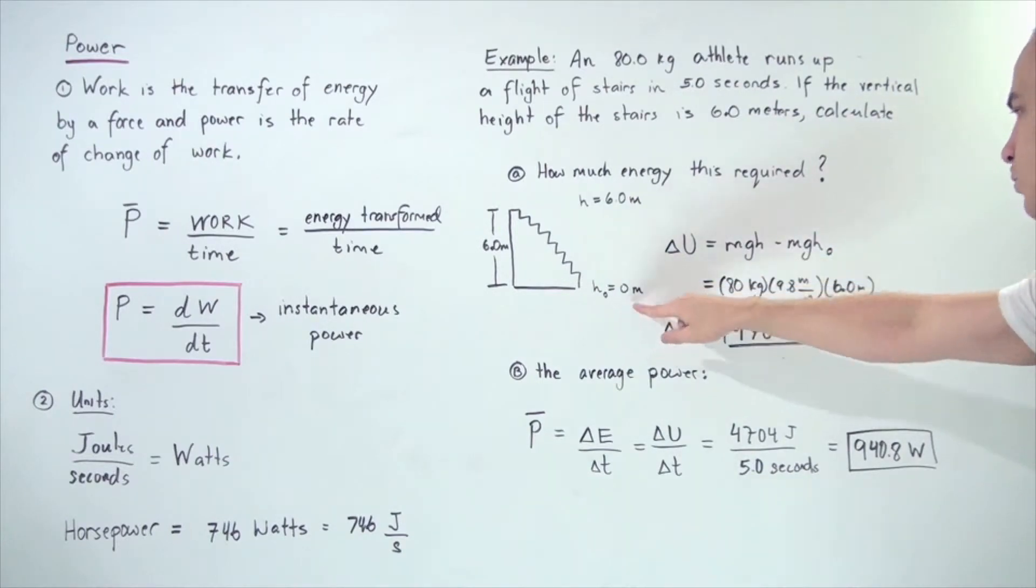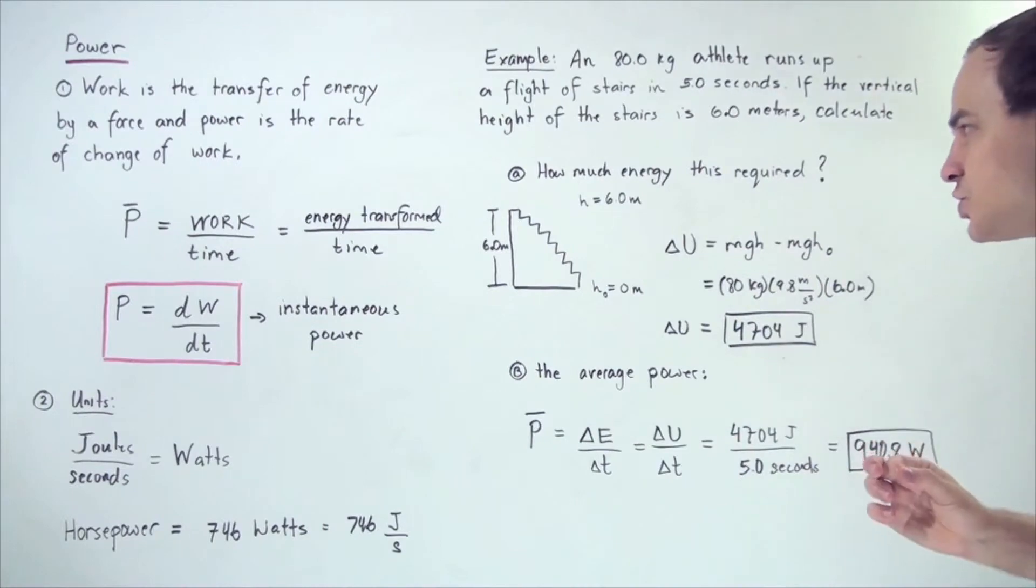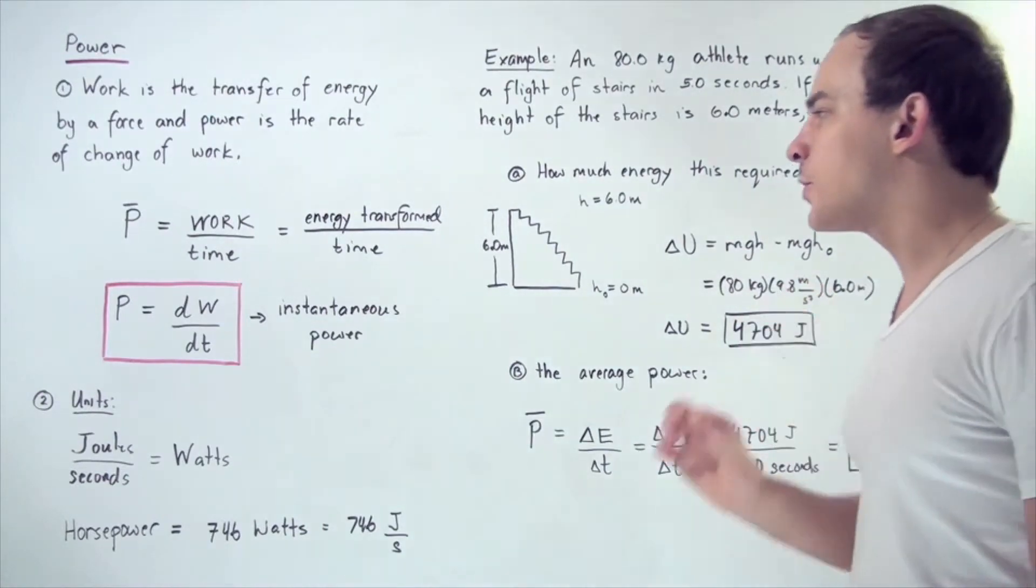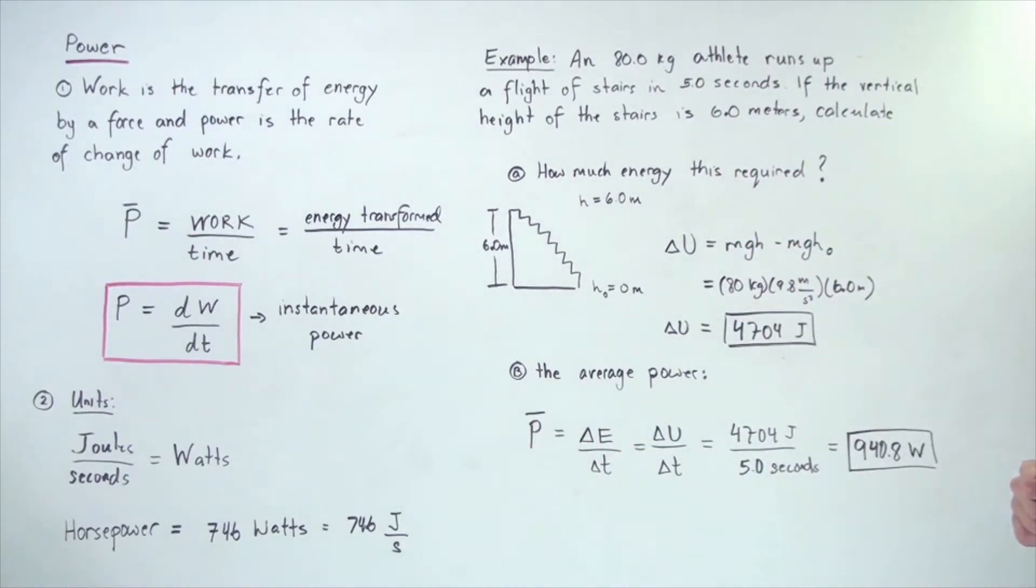Because H naught is 0, this term cancels out, and we see that the gravitational potential energy that the person gains is equal to 4,704 joules. Now we know how much time it takes for that person to gain this quantity of energy.